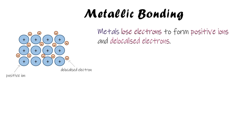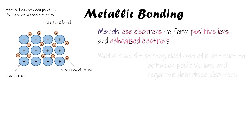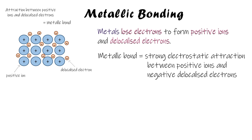We've got positive ions and a sea of delocalized electrons floating around between them. Because the ions are positive and the electrons are negative, there's an attraction between them — just like with ionic bonding. This attraction between the ions and the electrons is the metallic bond. The definition of a metallic bond is a strong electrostatic attraction.